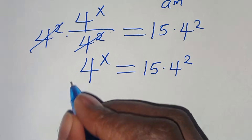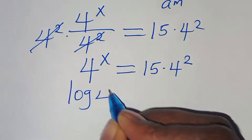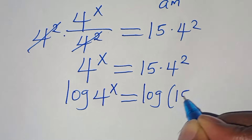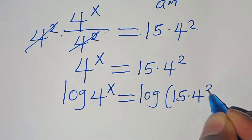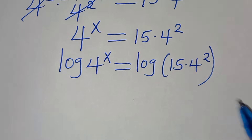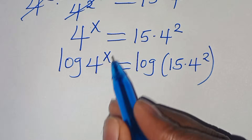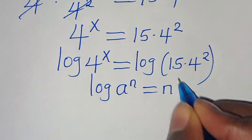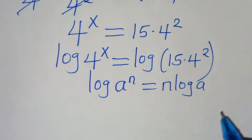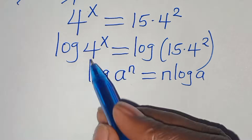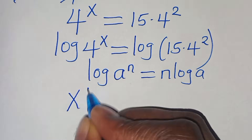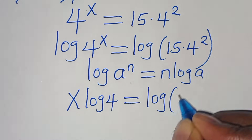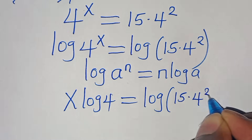To solve for x here, we introduce logarithm on both sides. So we have log of 4 to the power of x, and this is equal to log of 15 multiplied by 4 to the power of 2. The next step is that log of 4 to the power of x is in the form of log a to the power of n, which we can express as n times log a. Applying this power rule property, log 4 to the power of x becomes x times log 4, and this equals log of 15 multiplied by 4 to the power of 2.